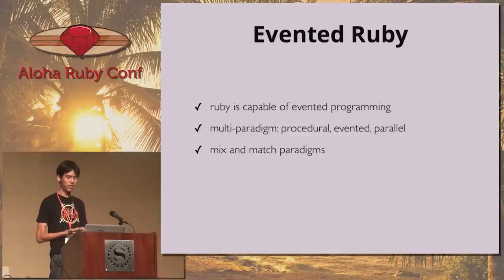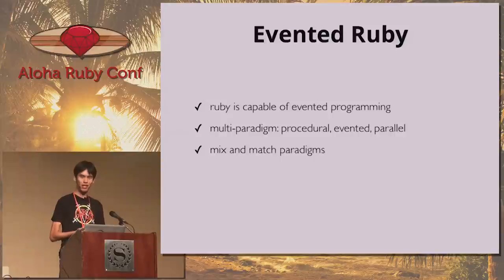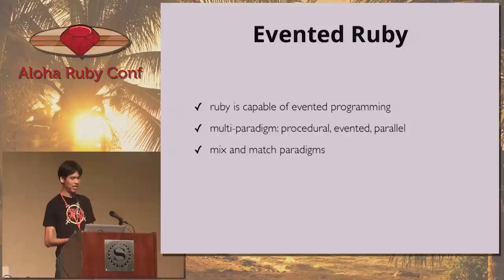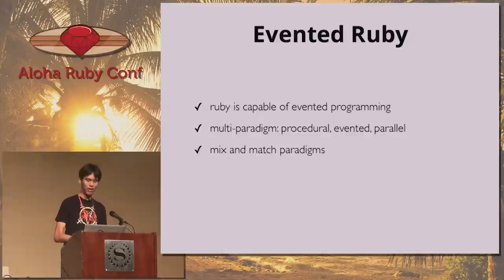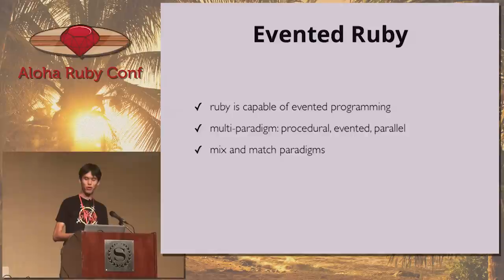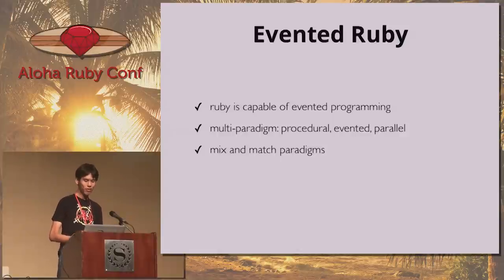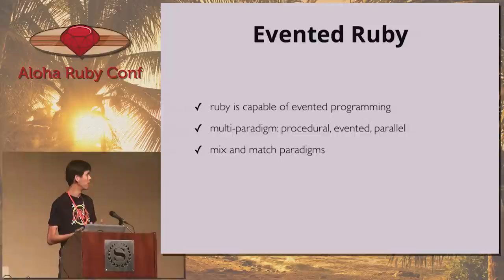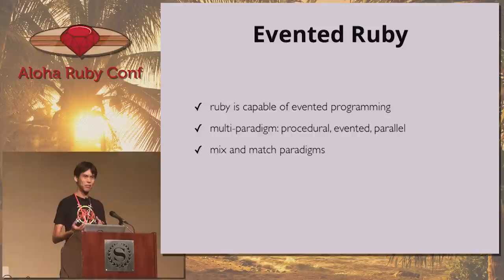Now we know that Node can give us better concurrency than Rails, but the caveat is that ugly callback soup. So the question is: can we get some of the same benefits with Ruby, but without the drawbacks? Ruby is definitely capable of evented programming and it's a general-purpose language. Typically we write Ruby procedurally — each line executes after the next — but it also allows us to do Node's evented style, and if the problem fits, we can also do parallel computing with threads. The nice thing — but also the main drawback — is you can mix and match these paradigms.